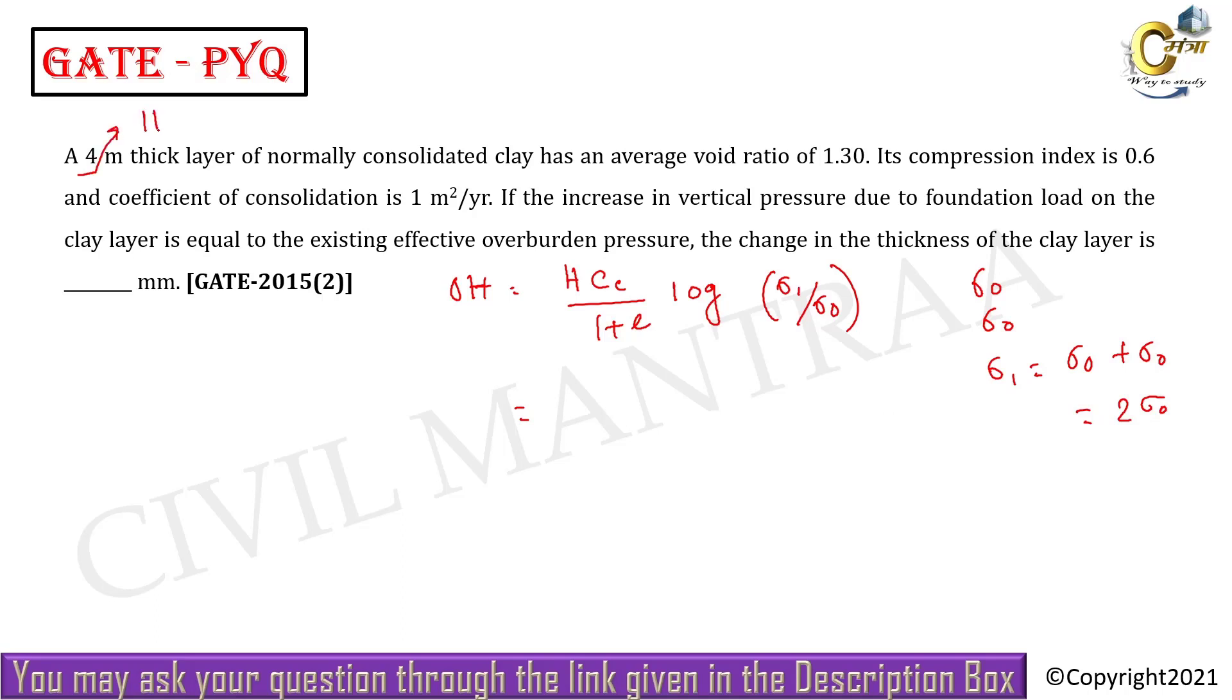4 meter thick, that is your H. So 4 into 0.6, compression index is given, this is your Cc, 0.6 by 1 plus e_0. That is average void ratio is given, e equals 1.3, log 2 sigma_0 by sigma_0. So how much is it? If you calculate, its value is going to be...